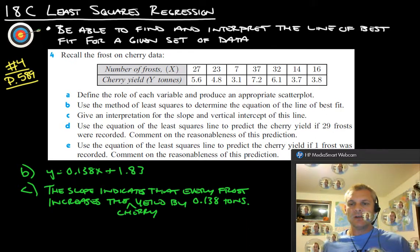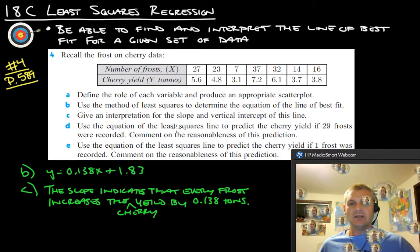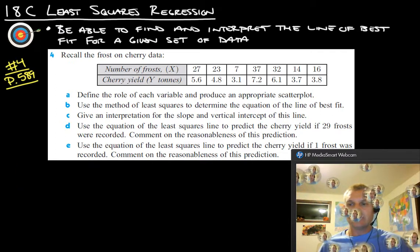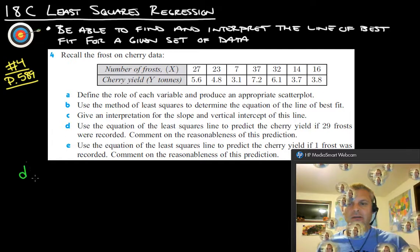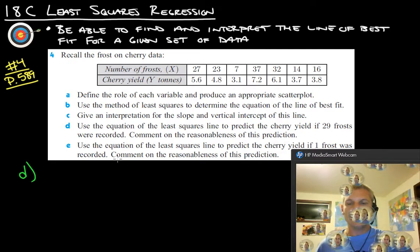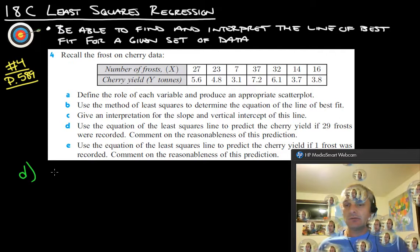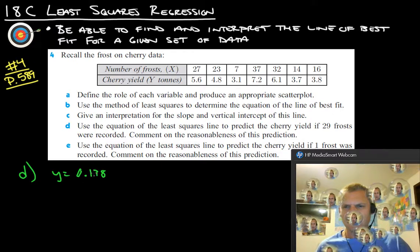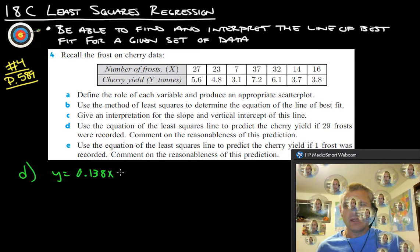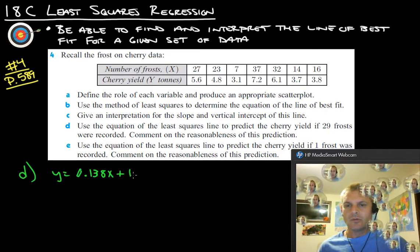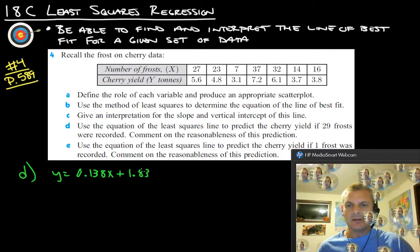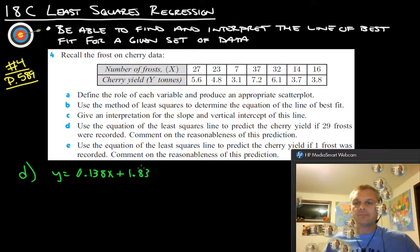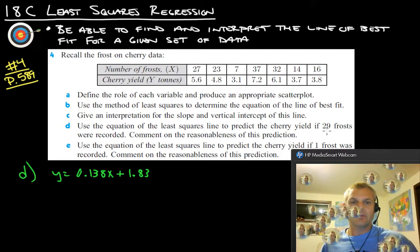So let's go on to D then. It says use the equation of the least squares line to predict the cherry yield if 29 frosts were recorded. So now we're going to predict with 29. So again, we have our equation, which is, I wrote it down here. It's y equals 0.138, that is a 3, but not a good one, 0.138x plus 1.83. So there's our equation of our best fit line.